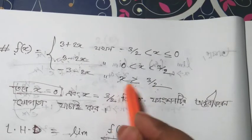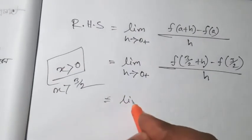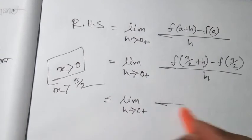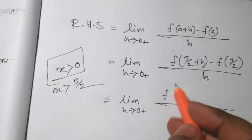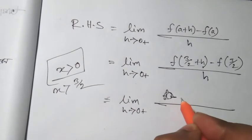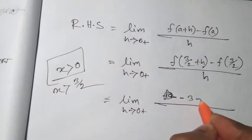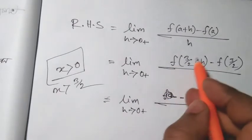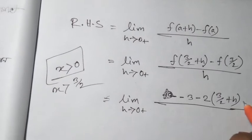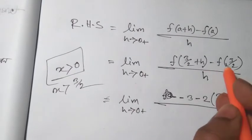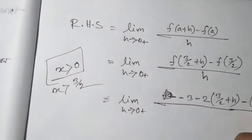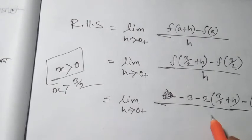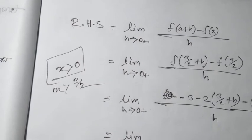So we have the function minus 3 minus 2x for the right-hand side. The right-hand derivative is: limit h tends to 0 plus, f(3/2 + h) minus f(3/2), divided by h. Since x > 3/2, we use f(x) = -3 - 2x, so f(3/2 + h) = -3 - 2(3/2 + h), and f(3/2) is the same function value.